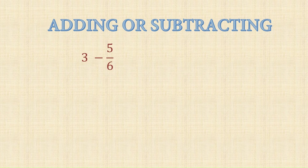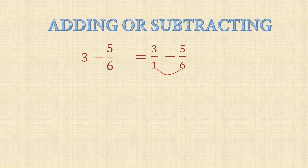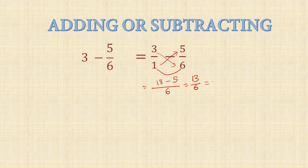Consider 3 minus 5 upon 6. Since 3 is a whole number, write it as 3 upon 1. Then subtract: LCM is 6. Cross-products: 3 into 6 is 18, minus 1 into 5 is 5. This gives 13 upon 6. Converting to a mixed fraction gives 2 and 1 upon 6.